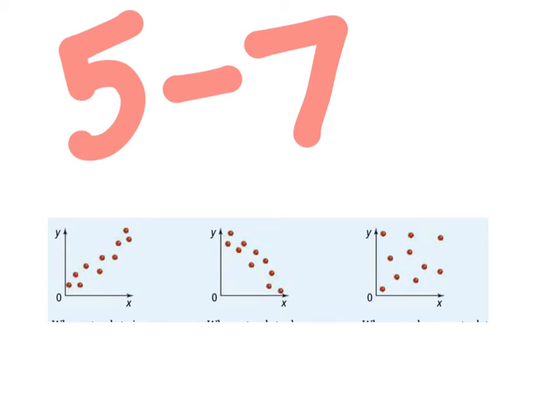Read and got it here in 5.7. Again, bringing back that idea: positive correlation, negative correlation, no correlation. So again, with respect to scatter plots.